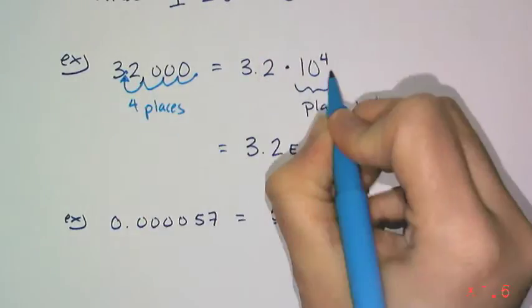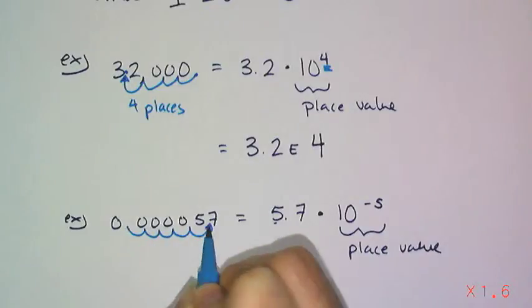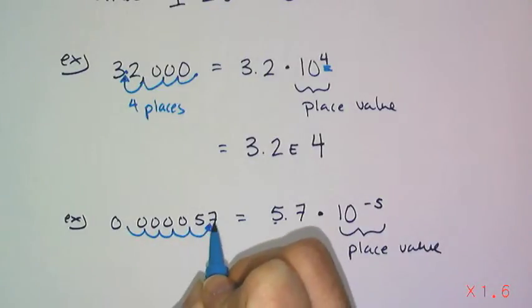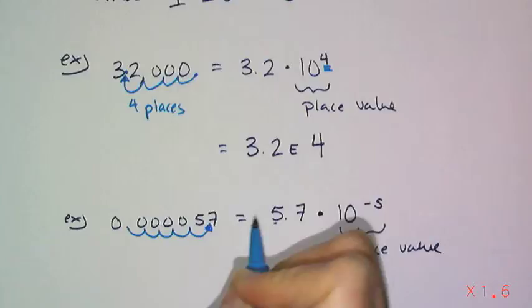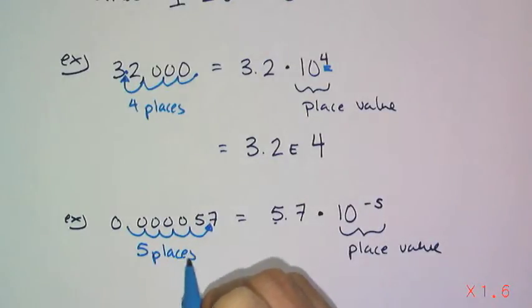And the number of places tells you that exponent. And so I do the exact same thing here when the number is really close to 0. I move the decimal so that my number comes between 1 and 10, which in this case is 5.7. And I think about how many places I moved it, and I moved it 5 places.